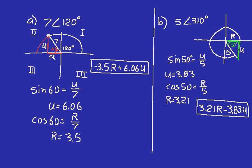We use that graph to help us locate where the point is, and we use the magnitude and direction to help us get there. Then we set up a right triangle relative to the x-axis based on that magnitude — the magnitude is our hypotenuse. We solve for the two unknown sides, and those equal our rectangular coordinates. Instead of writing it as 3.21 comma 3.83, we use R and U: R stands for right, U stands for up. Since it's negative 3.83, we go down 3.83 to get to that point.